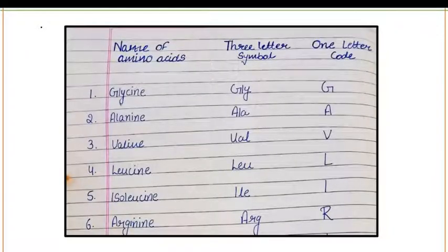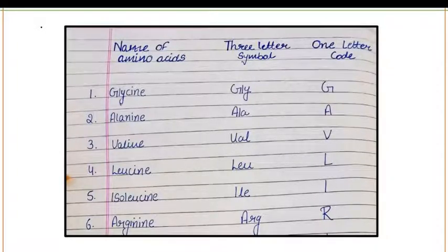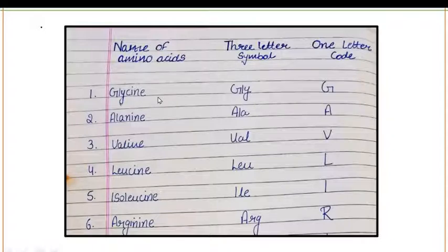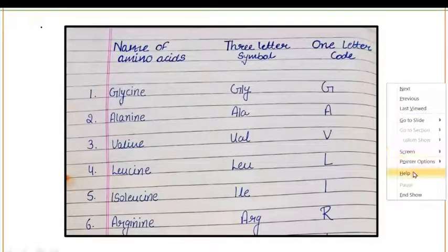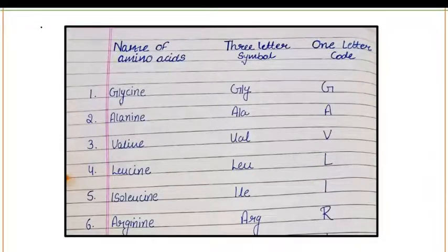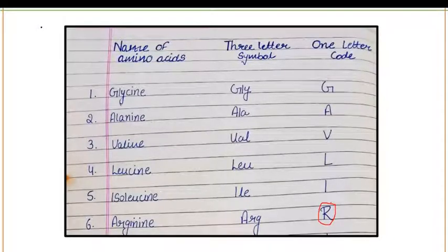In the next few slides we have 20 different kinds of amino acids, and you need to remember the one-letter code for each amino acid — this is very important. Glycine is represented by G, alanine by A, valine by V, leucine by L, isoleucine by I, and arginine by R. It is very important to remember that arginine is represented by capital letter R.